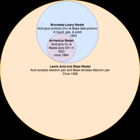For example, consider what happens when acetic acid, CH3COOH, dissolves in liquid ammonia: CH3COOH + NH3 → NH4+ + CH3COO−. An H+ ion is removed from acetic acid, forming its conjugate base, the acetate ion, CH3COO−. The addition of an H+ ion to an ammonia molecule of the solvent creates its conjugate acid, the ammonium ion, NH4+.